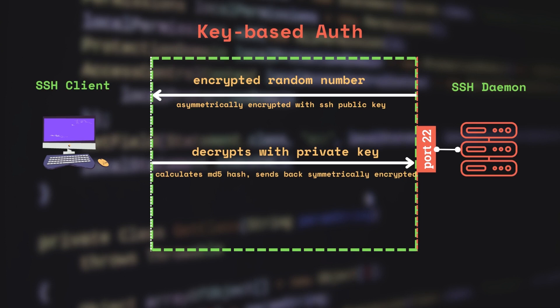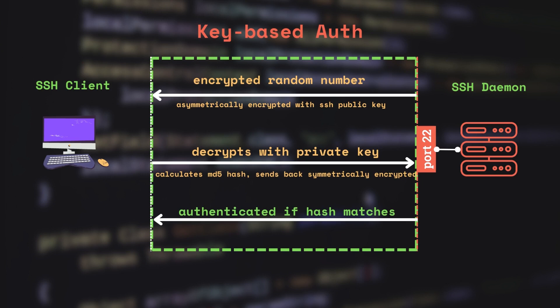The server already knows the number it sent, so it also calculates the MD5 hash and compares the value with the one returned by the client. If it matches, then it proves the client has the private key, and authentication is successful. So that was a high-level overview of how SSH works behind the scenes.